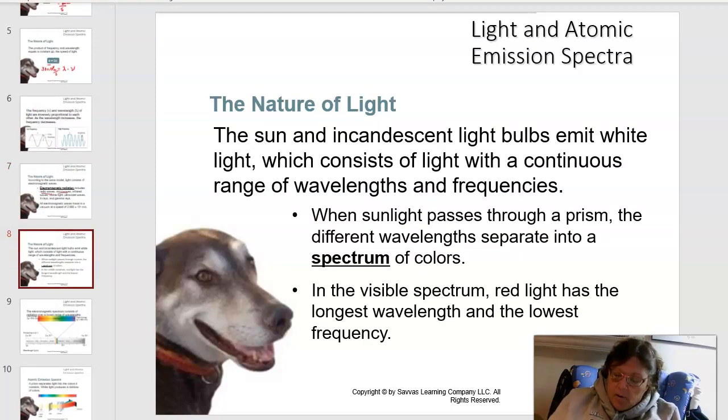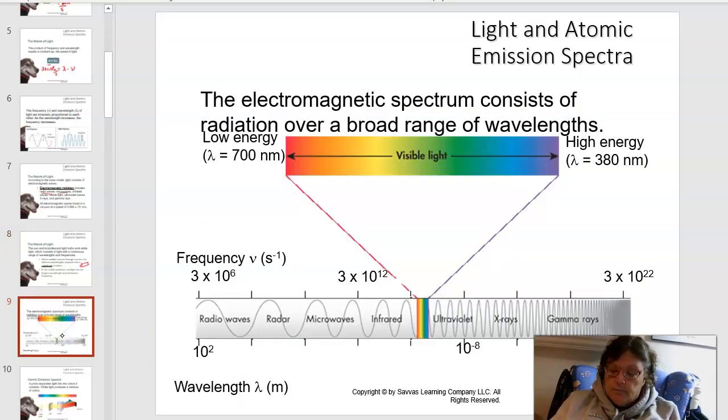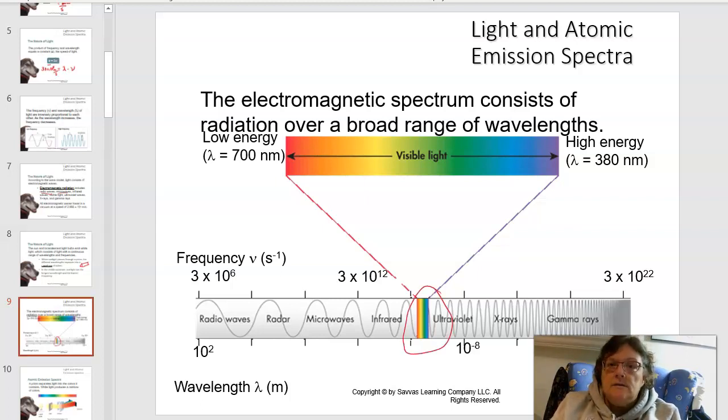The sun and the incandescent light bulb emit white light, which consists of light with a continuous range of wavelengths and frequencies. When sunlight passes through a prism, you get a rainbow, and hopefully you've all seen that. This piece in the middle that's colorful is the visible light. But notice that there's a whole bunch of other light, and this is just a small piece. Visible light is only a small piece of light.